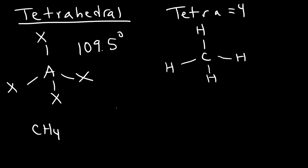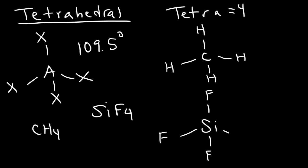Another example of a tetrahedral structure is silicon tetrafluoride. Like carbon, silicon is surrounded by four atoms — in this case four fluorine atoms instead of four hydrogen atoms. The geometry is very similar; you just have different atoms. The bond angle is still approximately 109.5 degrees.